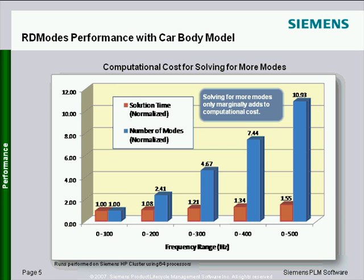Another way of looking at scaling, in addition to number of processors, is how does it scale if you ask for more modes? Here's an example using 64 CPUs where we solve for modes in the 0 to 100 hertz range as a baseline, then start solving for a wider mode range. When we go out to 500 hertz, we calculate almost 11 times as many more modes as 0 to 100 hertz, but it only took 50 percent longer. So it's a great way of scaling for computing more modes with very little penalty.